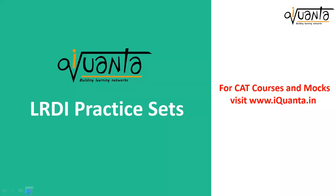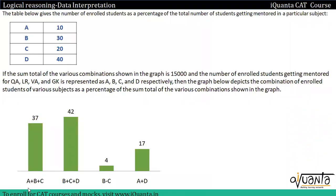Hi everyone. In this video we will understand how we can solve this type of set. In this set we are given that the table below gives the number of enrolled students as a percentage of the total number of students getting mentored in a particular subject.